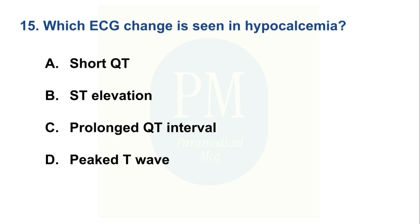Which ECG change is seen in hypocalcemia? Option A: Short QT, Option B: ST elevation, Option C: Prolonged QT interval, Option D: Peaked T wave. The correct option is Option C, prolonged QT interval.